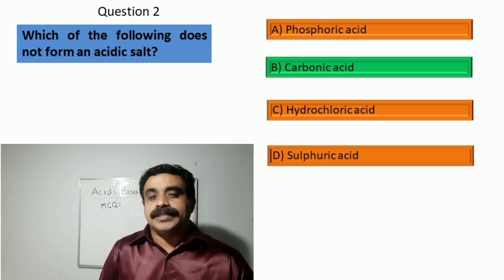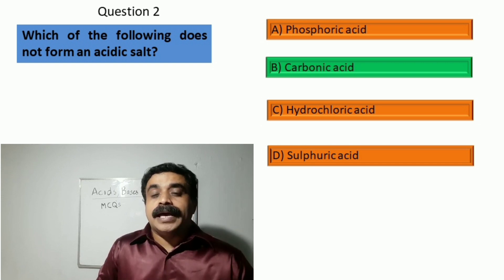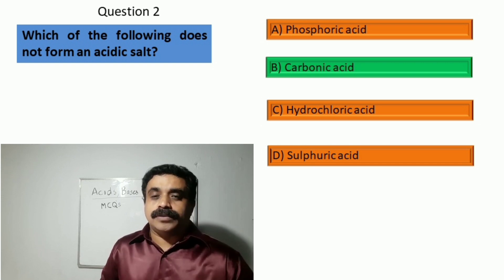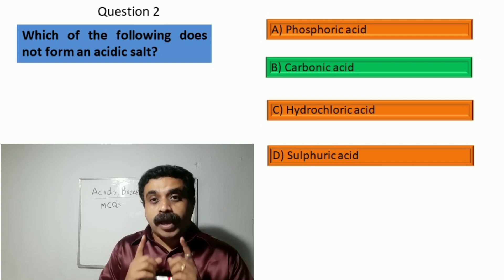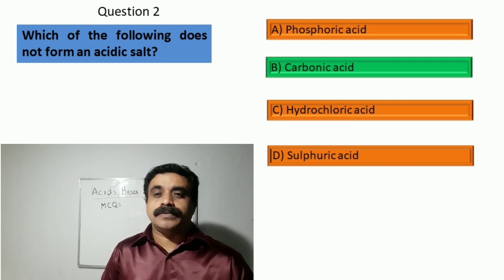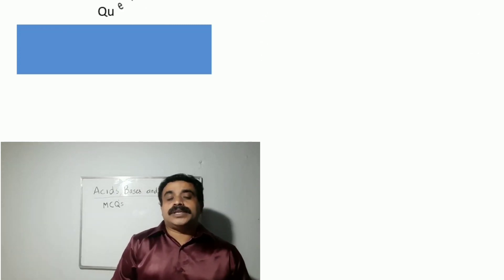Carbonic acid is a weak acid, and to form an acidic salt a strong acid is required.